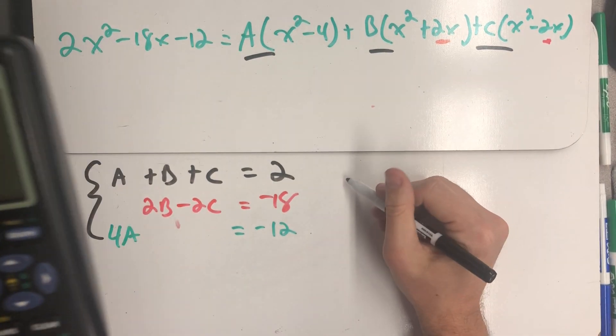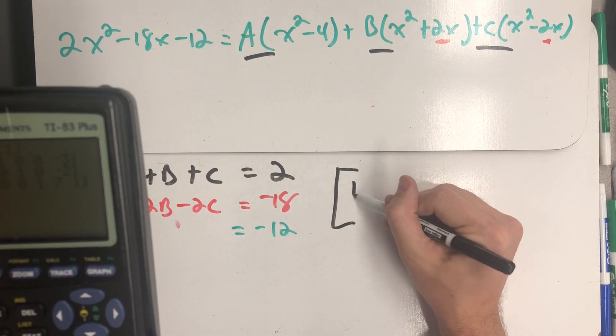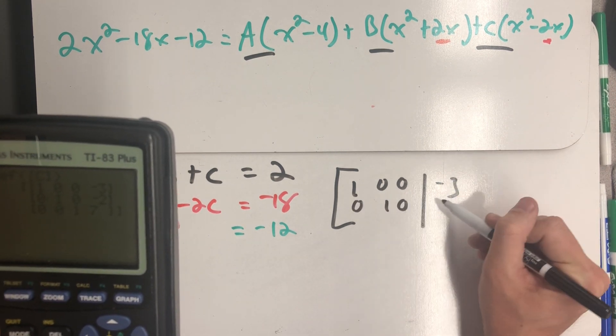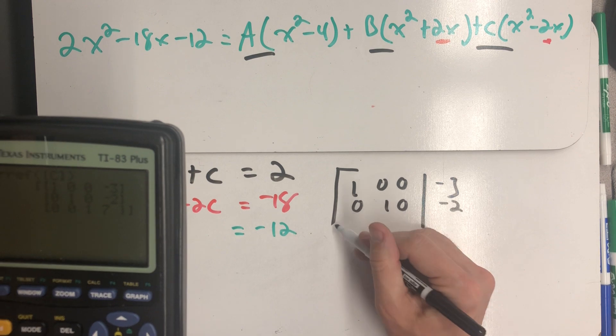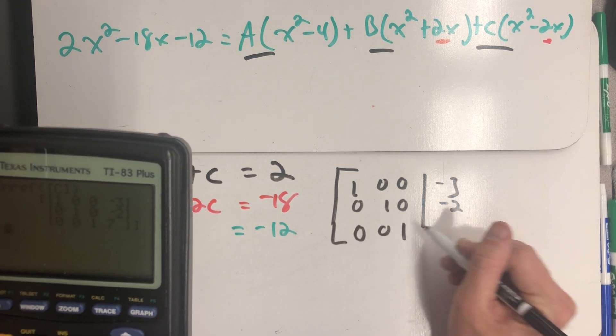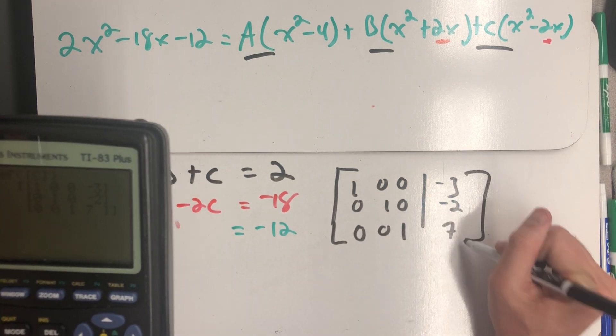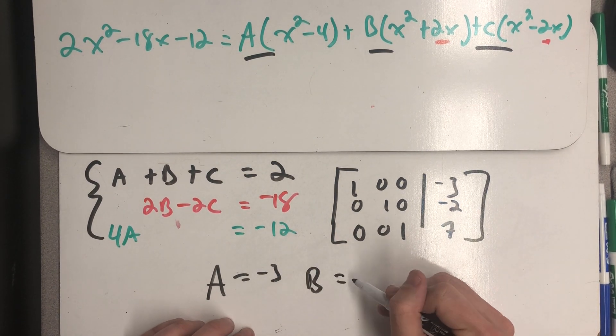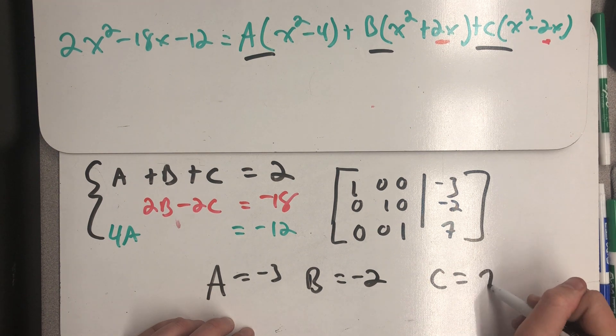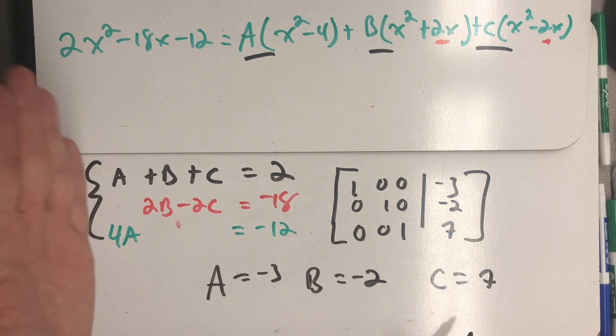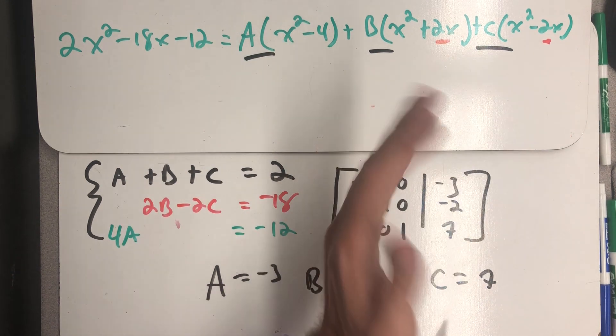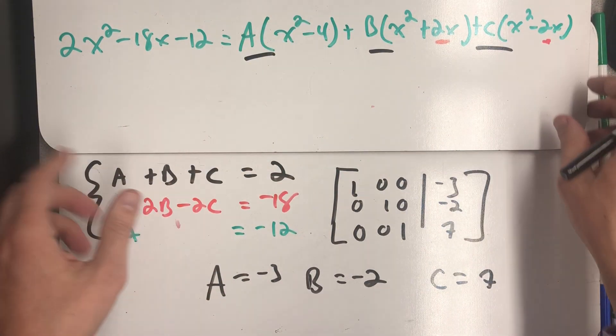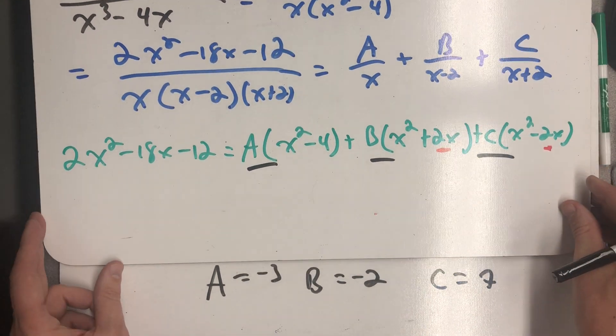So my reduced row echelon matrix, I find out that A was minus three, B was minus two, and C was seven. And I know this because I had A's, B's, C's. So this is a column for A's, a column for B's, and a column for C's. And that lets me finish my partial fraction decomposition.